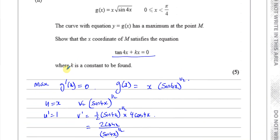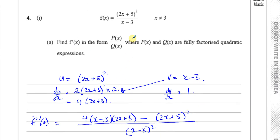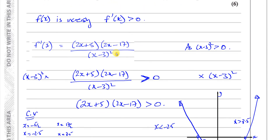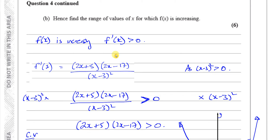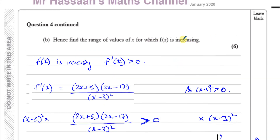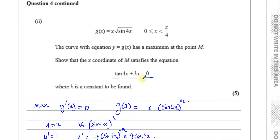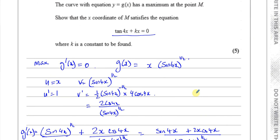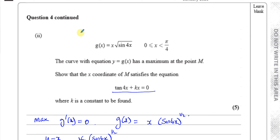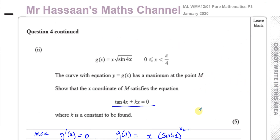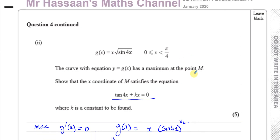So that's the end of question number 4, which is all about differentiation. We started with part A using the quotient rule, part B used understanding of increasing and decreasing functions — introduced in P2 — and the last part used the product rule with trig differentiation, requiring knowledge of trig identities. Other questions from this January 2020 paper are in the playlist, along with P3 integration questions. Thank you for watching.